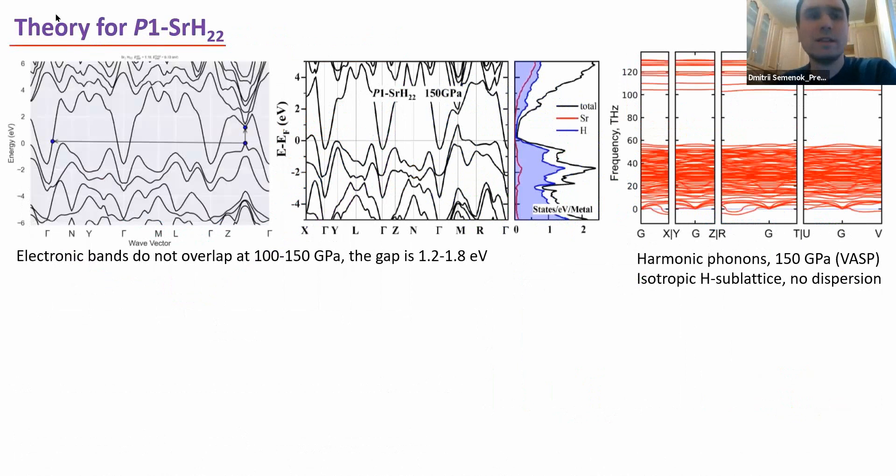When we know the structure, we can also calculate the electronic properties of compounds and compare it with experiment. We did it using two different methods, using VASP and Wien2k, exchange correlation functional PBE and TB09. In both cases, we found that close to the Fermi level, the valence bands and conductive bands do not cross each other and form a pronounced band gap with the size of about 1.2 to 1.8 electron volts. So this compound in theory also should be a semiconductor as we saw it in experiment when we saw that the compound actually is transparent.